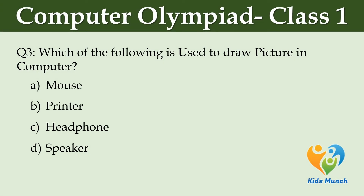Which of the following is used to draw a picture on a computer? Option A: Mouse. Option B: Printer. Option C: Headphone. Option D: Speaker.